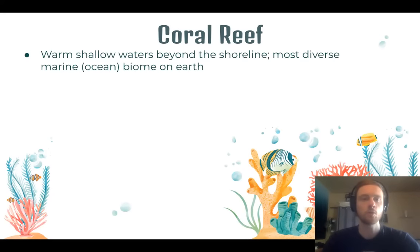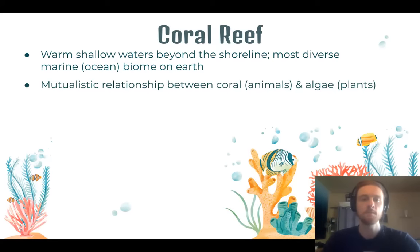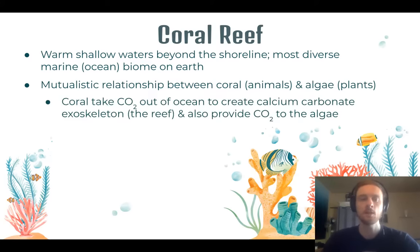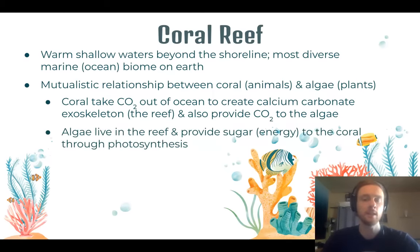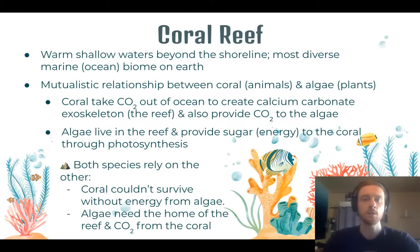Next, we have the coral reef — an ecosystem found in warm, shallow waters beyond the shoreline. It is one of the most biodiverse ecosystems on Earth and the most biodiverse ecosystem found in marine biomes. It features a mutualistic relationship between coral, which is an animal, and algae, which is a plant. Coral take in carbon dioxide from the ocean and create a calcium carbonate shell — the reef, their exoskeleton — which provides a home for the algae. The algae use carbon dioxide from coral respiration for photosynthesis to make sugars, which then fuel the coral. Neither organism could survive without the other.